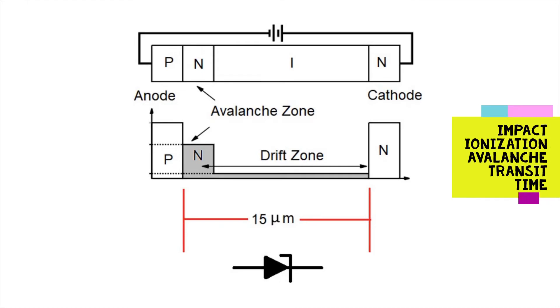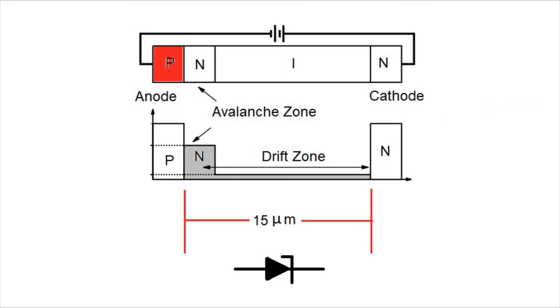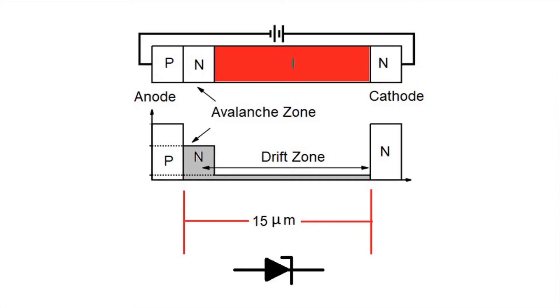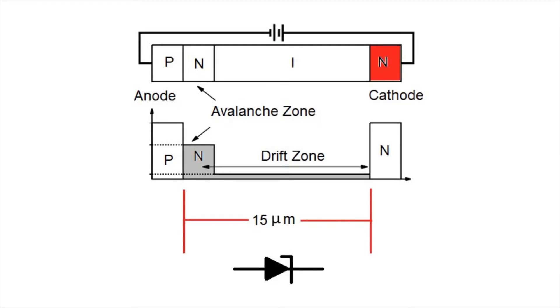This diode has extra layers shown here sideways. From left to right we have the anode doped positive, followed by a negatively doped avalanche zone, followed by a lightly doped intrinsic layer called a drift zone, and finally the cathode doped negative. This whole assembly is about 15 micrometers thick.